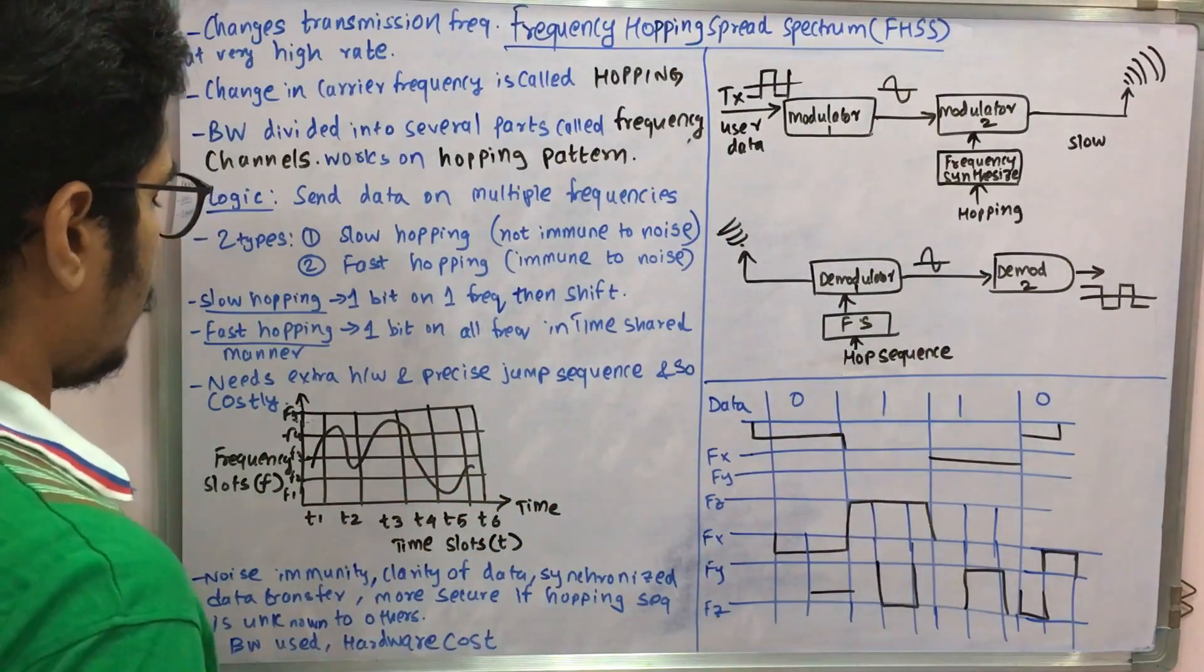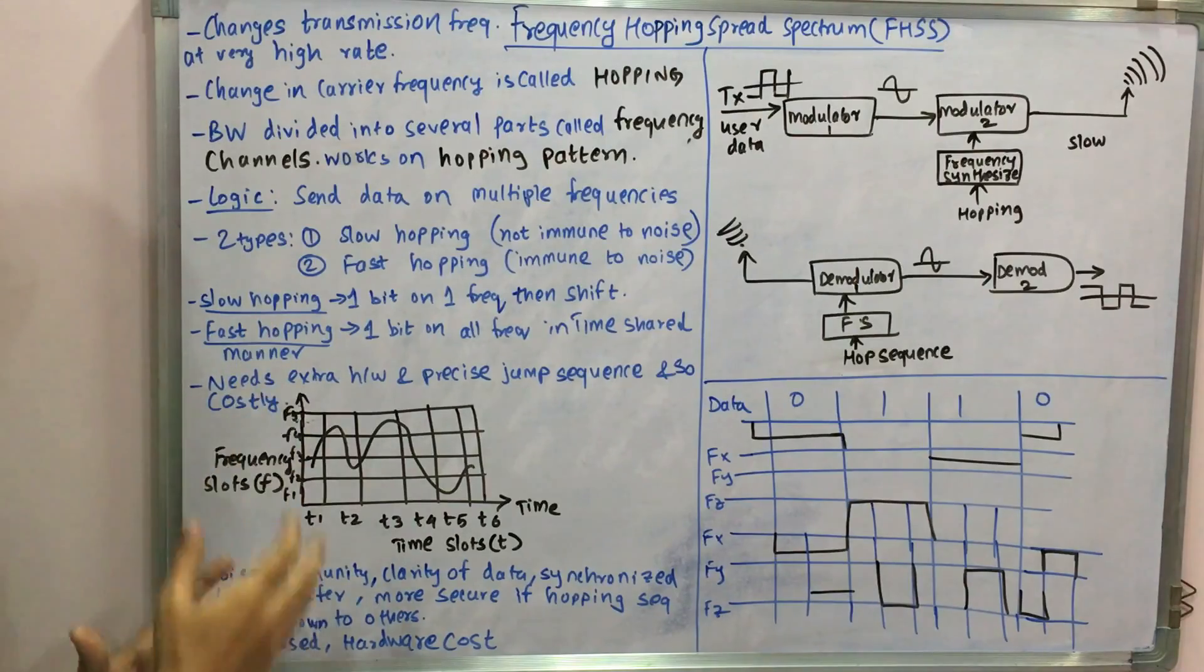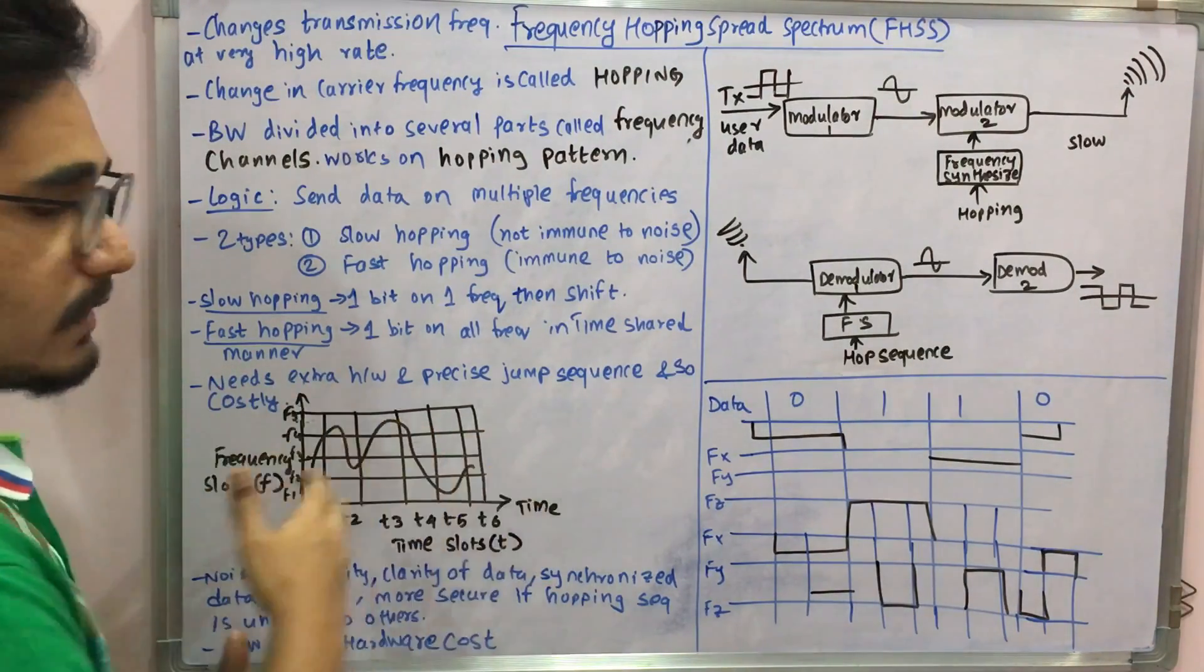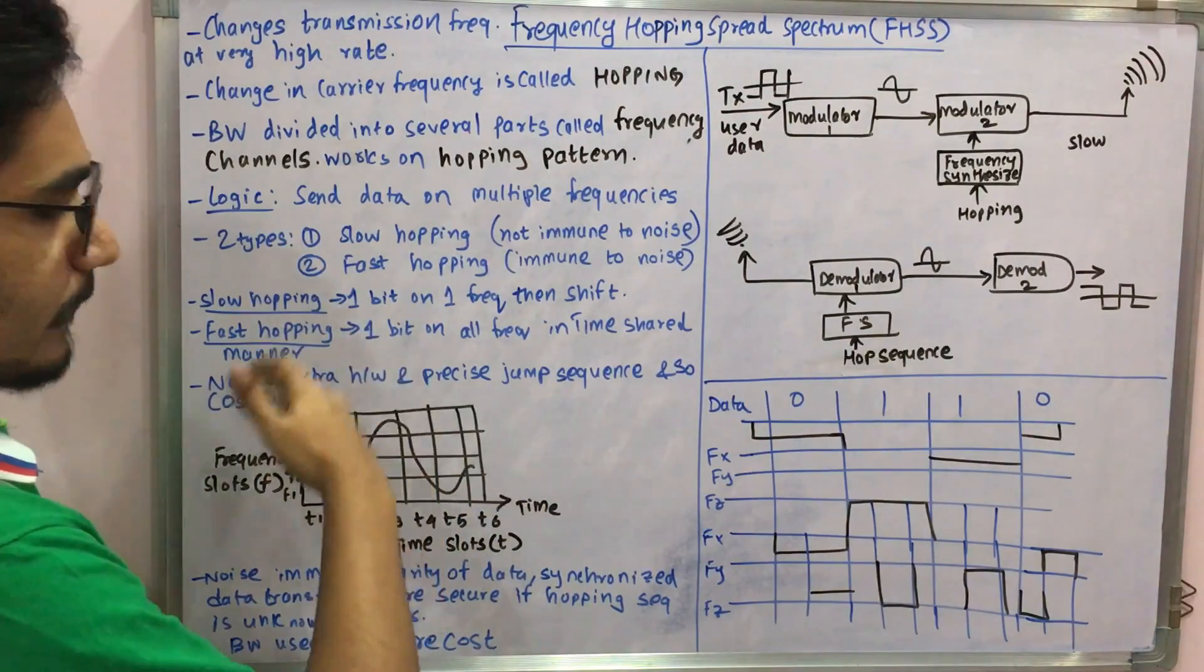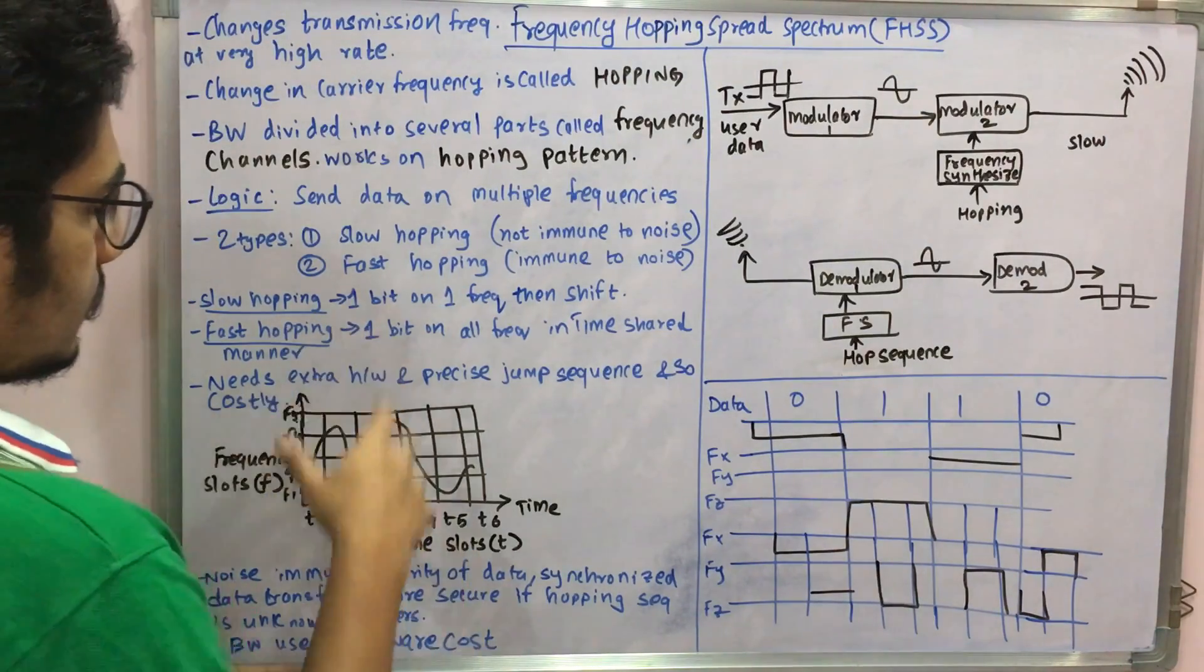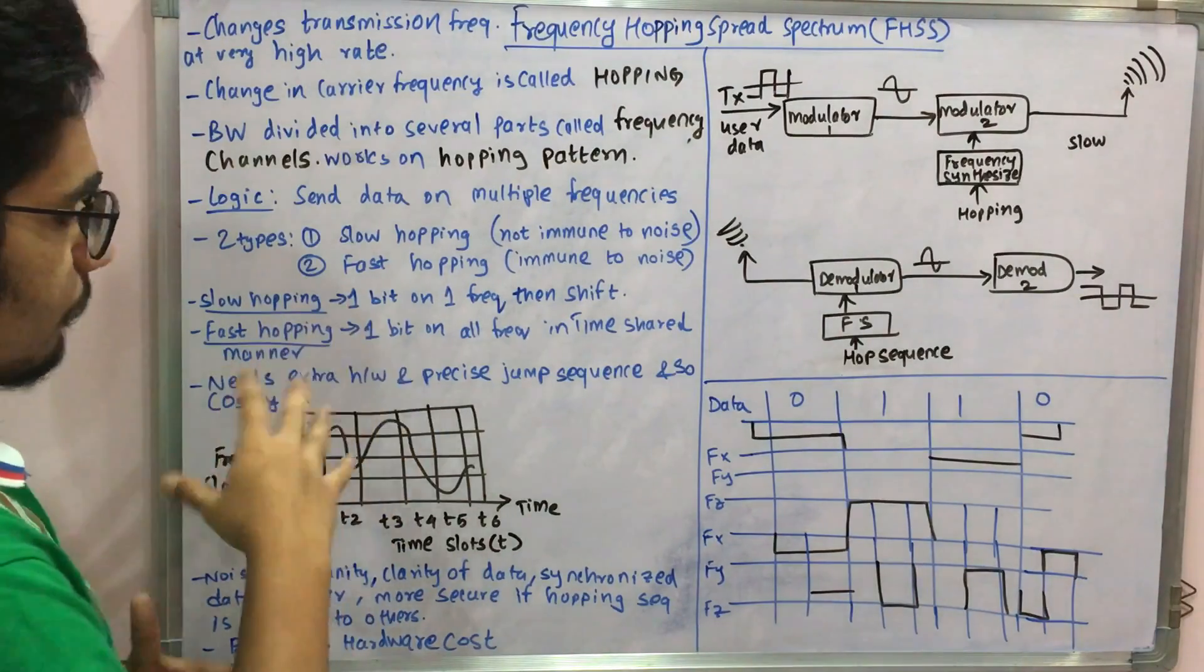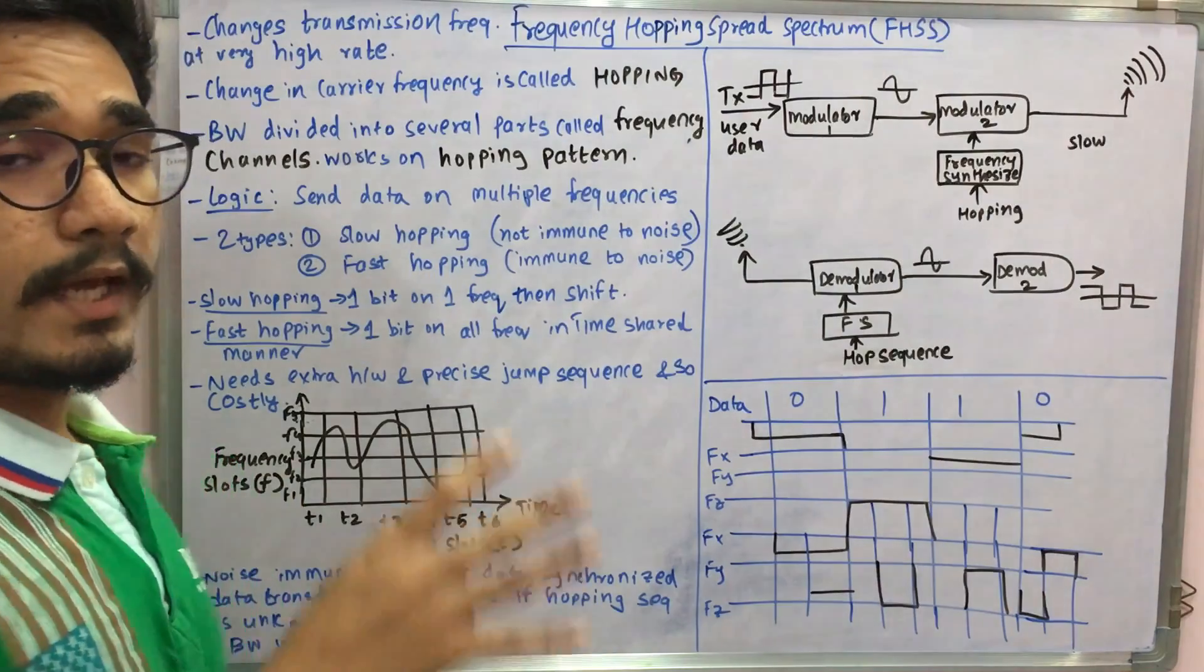We have this pattern. We have frequency slots on the y-axis and along the x-axis we have time slots. It's divided into different intervals, and you can see a frequency hop pattern here. This basically summarizes the data, how it's being sent at one particular time. If you come to know the algorithm or hopping pattern,